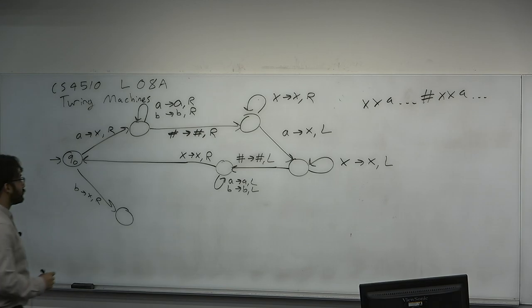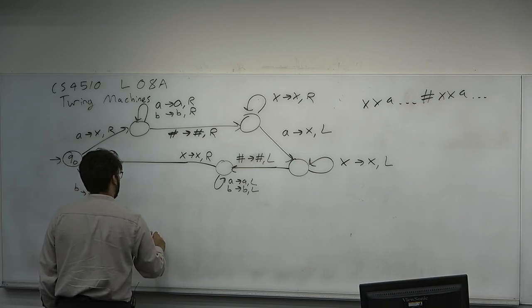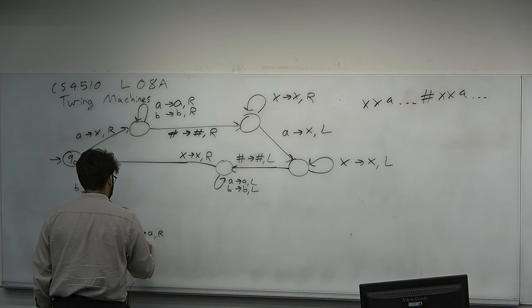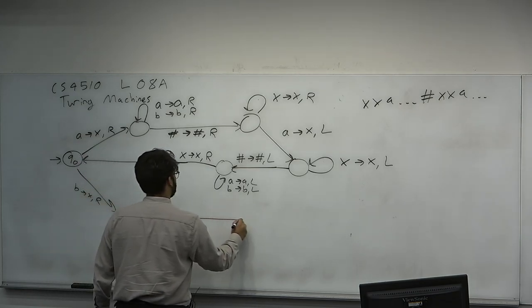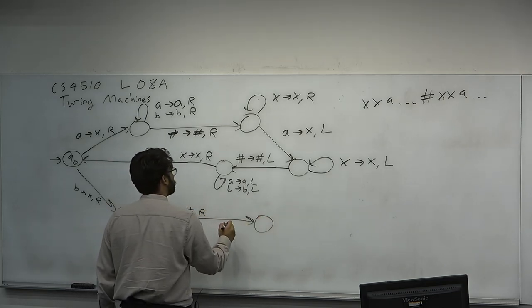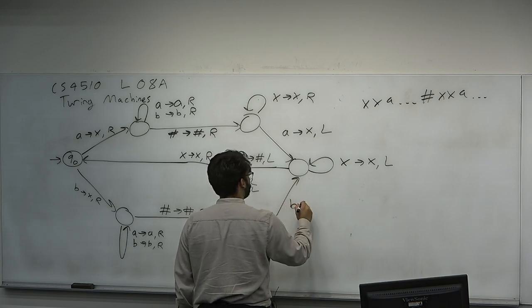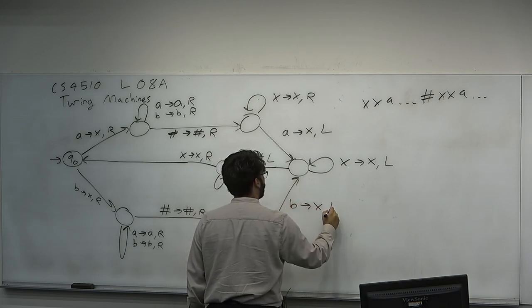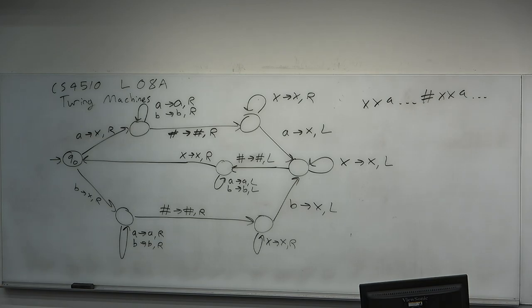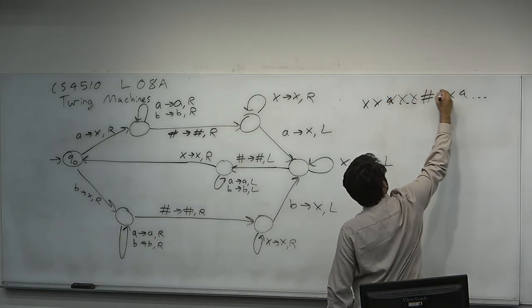We need to do the same for B's: read B at Q0, mark X, skip over all unmarked moving right, skip over all B's moving right. See a hash, jump over it. For all marked symbols, jump over them moving right. Only if you see a B do you reset yourself: mark it, move left.